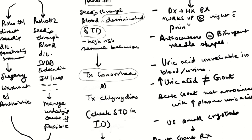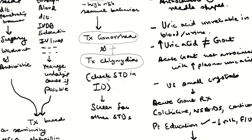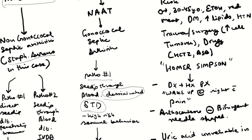Check the infectious disease section, because resistance patterns will determine whether gonorrhea is responsive to ceftriaxone. Also, whenever you treat gonorrhea, you must also treat for chlamydia, and vice versa. Additionally, screen for other STDs — herpes, HIV — because they tend to co-occur. That covers gonococcal septic arthritis.